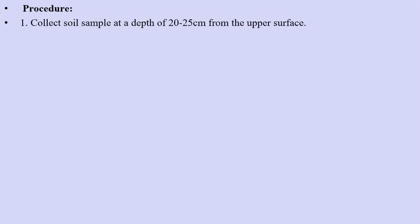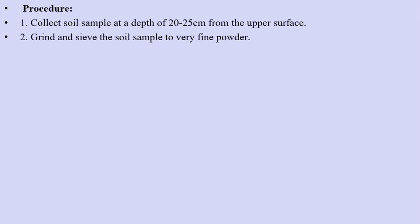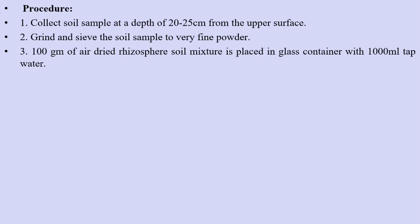Procedure for Isolation of Mycorrhizae: Collect a soil sample at a depth of 20 to 25 centimeters from the upper surface. Grind and sieve the soil sample to a very fine powder. 100 grams of air-dried rhizosphere soil mixture is placed in a glass container with 1000 ml of tap water.